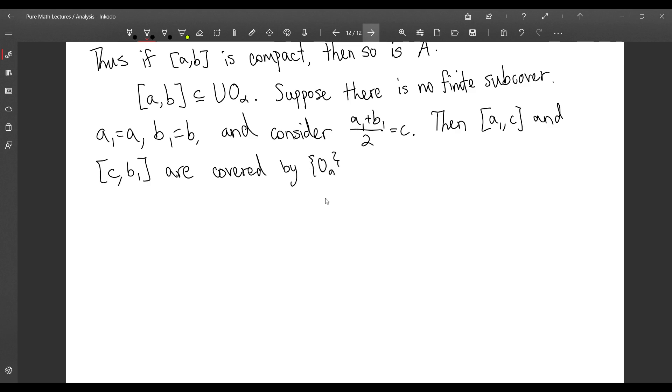Then, the intervals A1 to C and C to B1 are covered by the O's. This is clear because these are subsets of this set, so they're obviously covered. And, therefore, one of these can't have a finite subcover. Because if these both had finite subcovers, then you could union them together, and then you'd get a finite subcover of the original interval. So, one of these does not have a finite subcover, and we are going to call it A2B2.